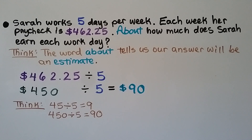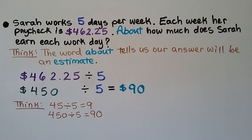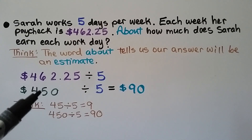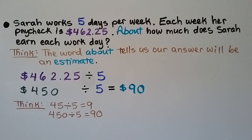Sarah works five days per week and her paycheck is $462.25 each week. About how much does Sarah earn each workday? The word 'about' tells us our answer will be an estimate. We have $462.25 divided by 5. We round to the compatible number 450; 45 divided by 5 is 9, so 450 divided by 5 equals 90. Sarah makes about $90 each day she works.